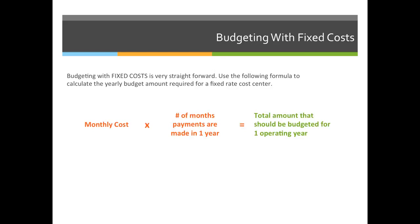When budgeting with fixed costs, it is a very straightforward formula. We take the monthly cost times the number of payments made in one year, and we get the total cost for the entire year. So if we pay $500 a month for our truck to deliver printed goods, we multiply that times 12 months in a year and get the total operating budget that that cost center needs.